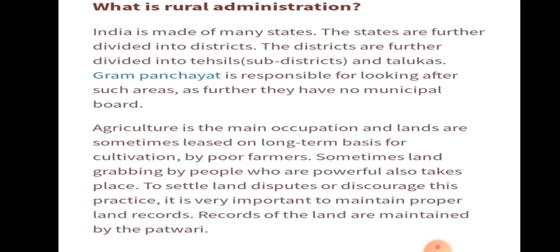India is a vast country. Yehi reason hai ki ek place se isay administrate nahi kiya ja sakta. Administration ke liye country ko 29 states and 8 union territories mein divide kiya gya hai. State ko further districts mein divide kiya gya hai, which has further subdivisions like tahsil and parganaz. Kuch states mein parganaz ko talukas kaha jata hai, joki several villages and towns se consist hote hai.